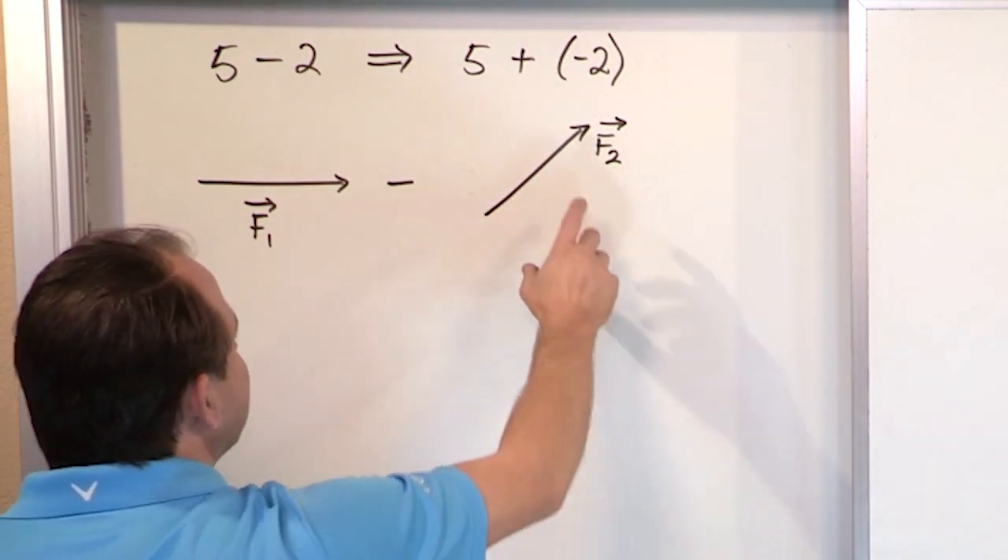So in order to actually do this subtraction, what we're going to do is change this subtraction into addition. But when we change it to addition, then we have to somehow reverse the vector just like we reverse the sign of the 2. The way you reverse the direction or change the sign of a vector is by flipping its direction. Its magnitude stays the same, the length stays the same, but you just put the arrow the other way.